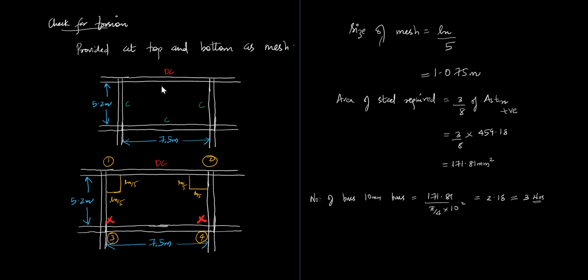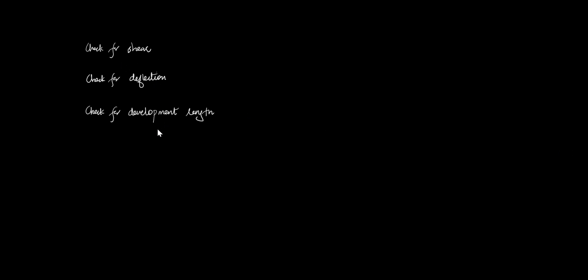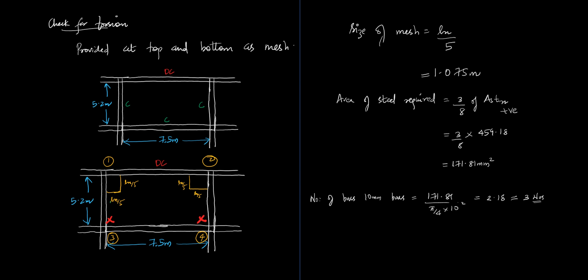You also need to check for shear, deflection, and development length, and complete the detailing. This concludes the two-way slab design. The next topics are staircase design and then design for limit state of collapse in compression — that is, column design. We will also have a live session for the detailing of this slab. Take care, thank you, and have a nice day.